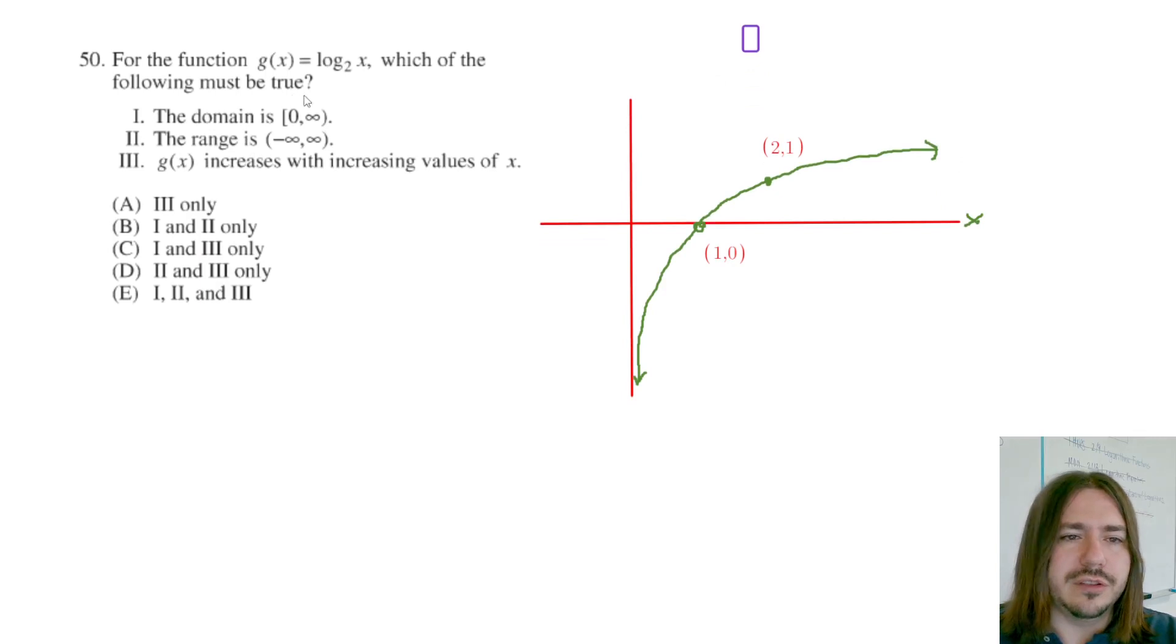So that means that 0 cannot be in the domain. And even though to fix this statement, you would want this to be a parentheses to say that everything above 0 would be in the domain, but not including 0. So statement 1 is not going to be true.